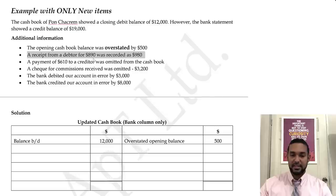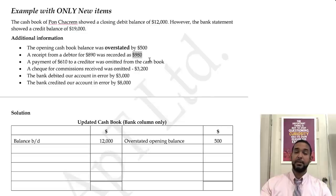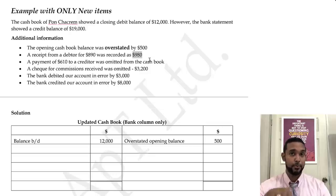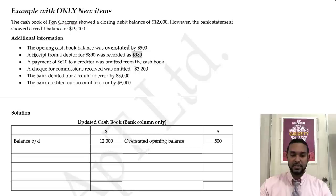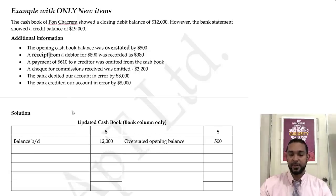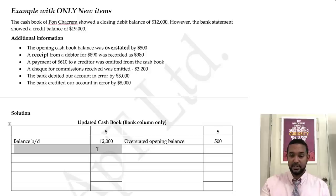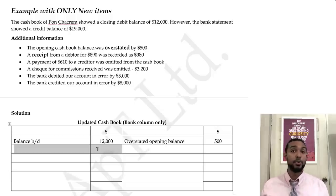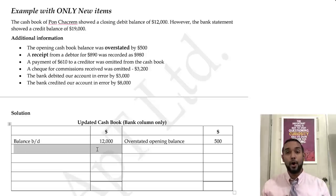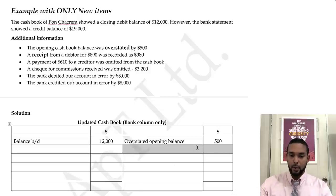A receipt from a debtor for $890 was recorded as $980 — that's $90 too high. It's a receipt, so it would have gone on the debit side, but the amount is overstated. To fix an overstated debit entry, we go on the credit side and put an entry for $90 — the amount of overstatement. So: overstated receipt, $90.